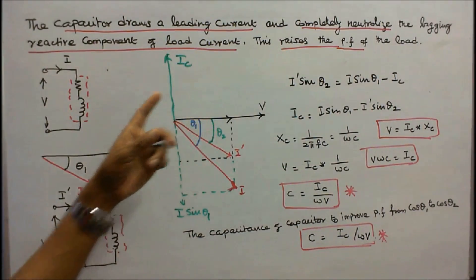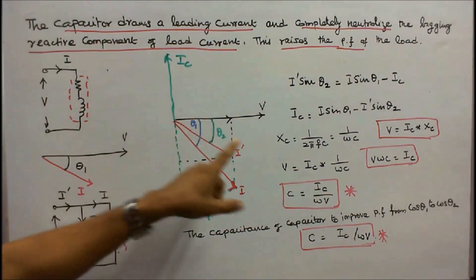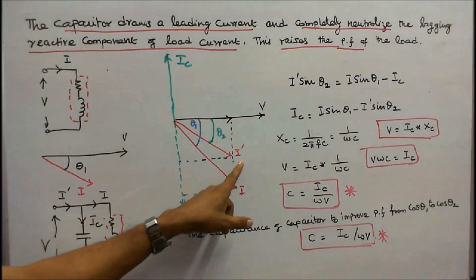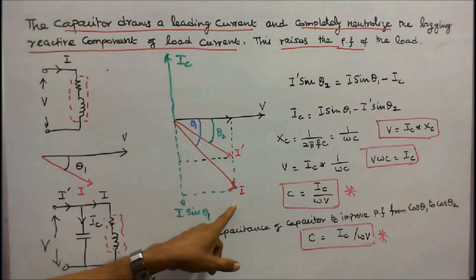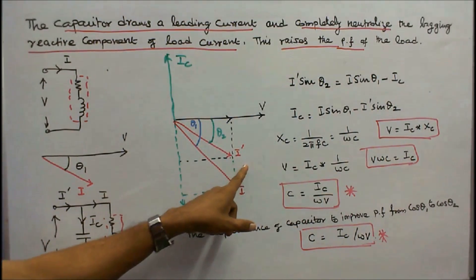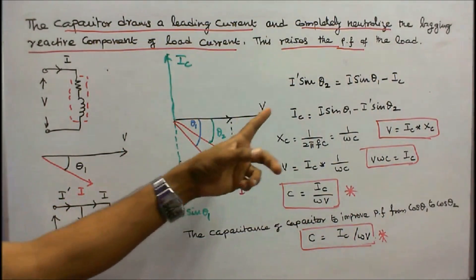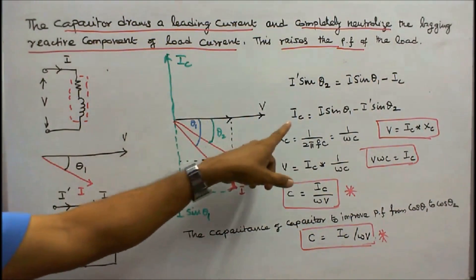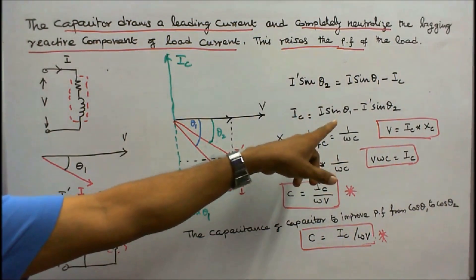This is the phasor diagram after connecting a capacitor across the load. Ic is the capacitor current, V is the supply voltage, I is the load current, and I dash is the resultant current. Theta 1 is the angle between V and I, and theta 2 is the angle between V and I dash. The reactive component current I dash sin theta 2 equals I sin theta 1 minus Ic. Therefore, Ic equals I sin theta 1 minus I dash sin theta 2.